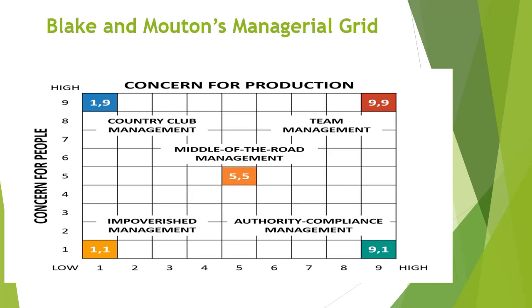Many things are common with Ohio State — high and low, concern for people and concern for production. This grid is advanced from that study; it fills the gap by defining scores with a 1 to 9 scale. Scores of 1 to 4 are considered lower, 6 to 9 are higher, and the highest score is 9. The first category is impoverished management at score 1,1 — a leader taking very little care of people and very little care of production.